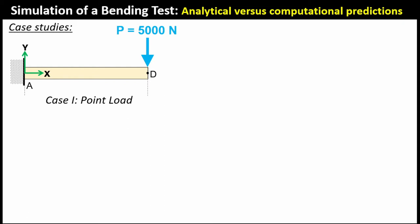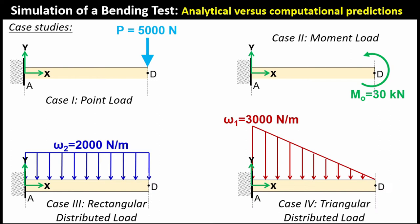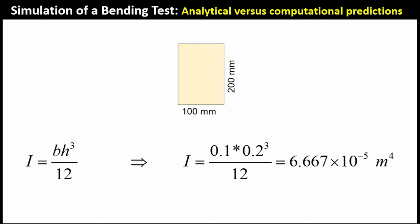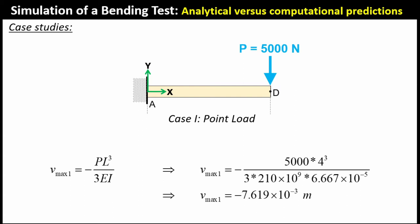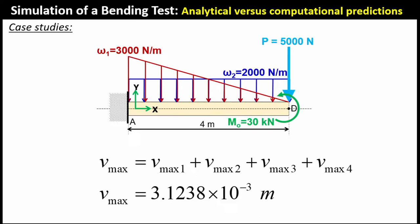We split this model into four categories. First we'll do the point load and compare the prediction, then the moment load, then the uniform distributed load, and finally the triangular load. For each case we want to assess the prediction — we need to calculate the area moment of inertia. We'll compare the analytical with the numerical prediction for each case, and hopefully when we bring them all together we'll get a prediction of the final end deflection of the beam.